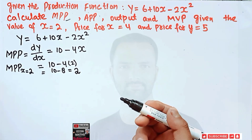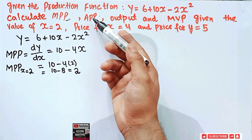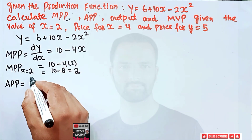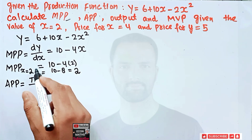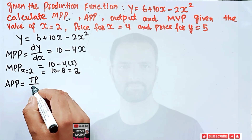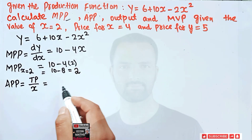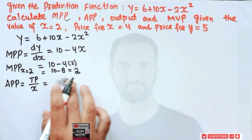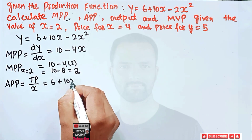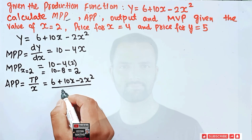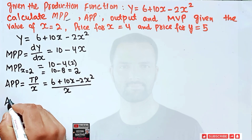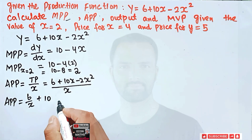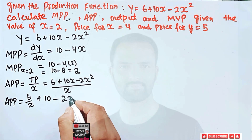After that, we are asked to find the average physical product. Average physical product is simply total product divided by input x. So APP = (6 + 10x - 2x²) / x, which gives us 6/x + 10 - 2x. This is our average physical product function.